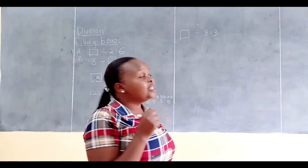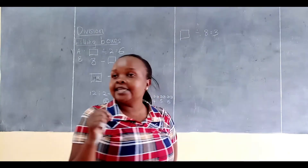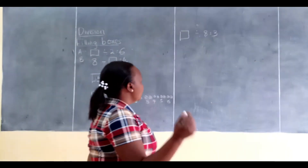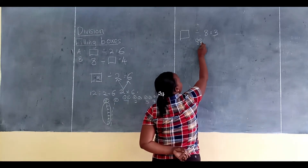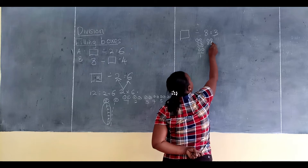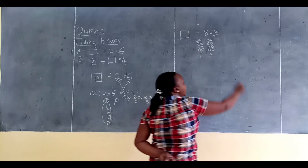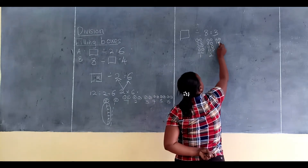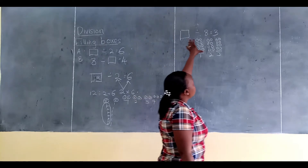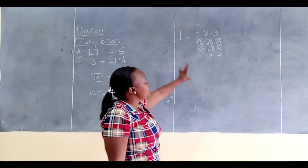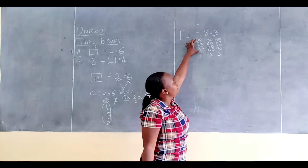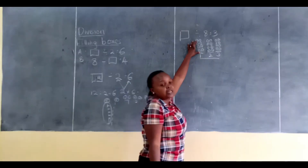From our sum, we are supposed to multiply 8 times 3. We are going to multiply it as a repeated addition by drawing balls. I will be drawing my 8 balls three times. One time, second time, third time — so I have drawn 8 balls three times. Here are my 8 balls, and these are the number of times I have drawn them.